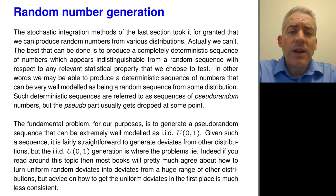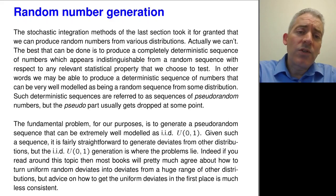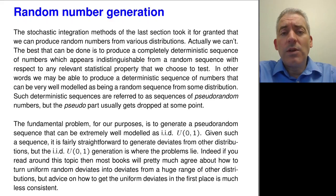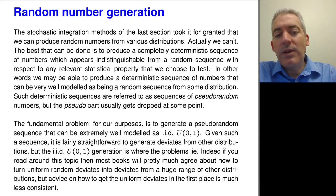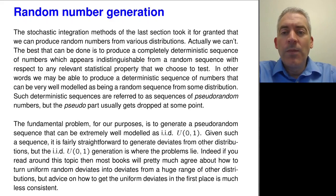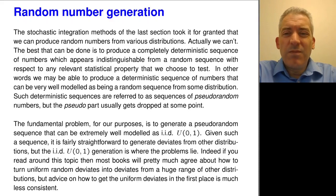We break the problem down by first tackling the problem of how to generate uniform 0-1 random quantities, and we make sure that our algorithm works and does indeed generate uniform 0-1 random quantities. Then given a source of uniform 0-1 random quantities, we can think about how to transform them to other distributions of interest - for example Gaussian, Poisson, gamma, and so on. So we have two separate issues: one is the random number generation issue - where does that source of uniform 0-1s come from - and then a different problem is how do we turn uniform 0-1s into other distributions of interest.